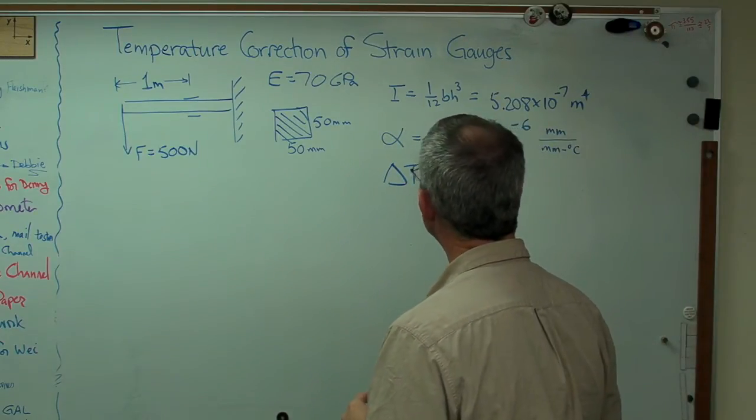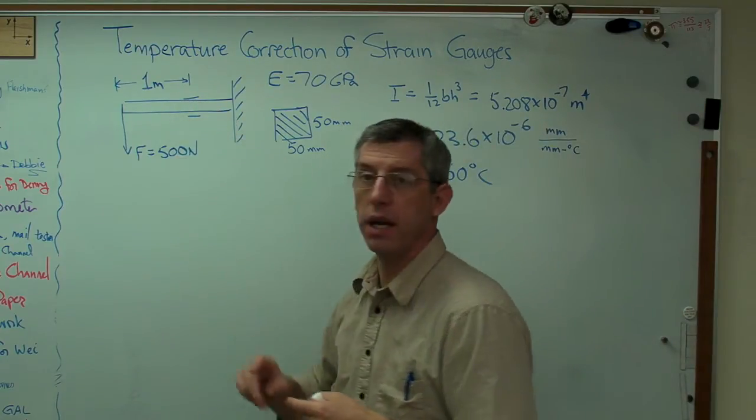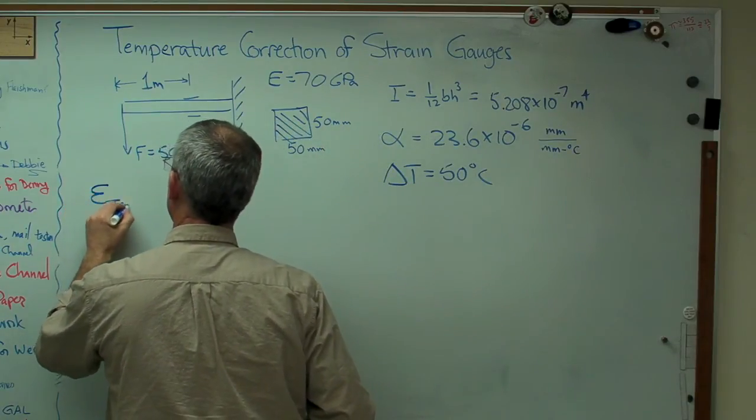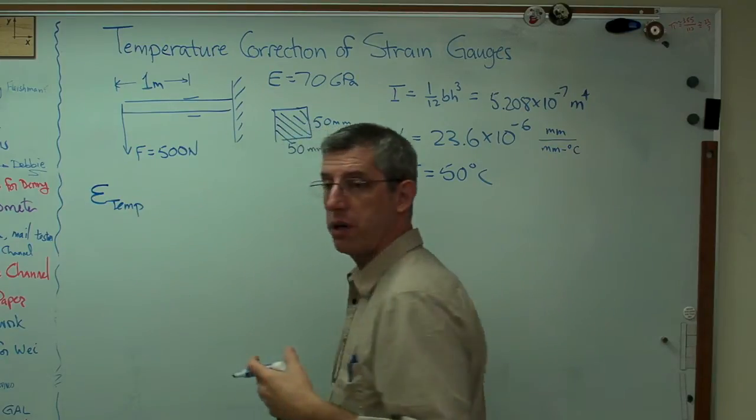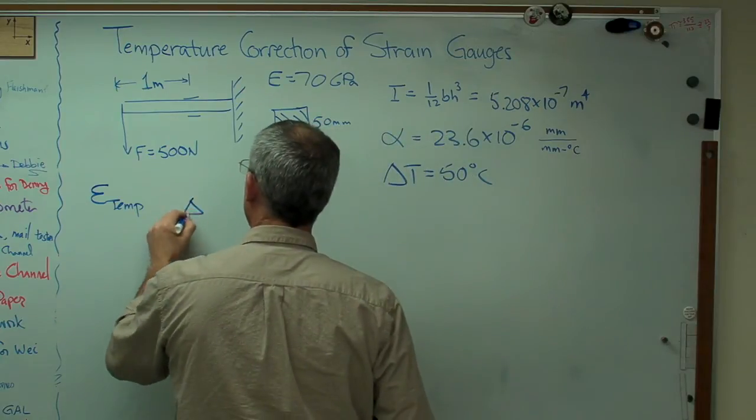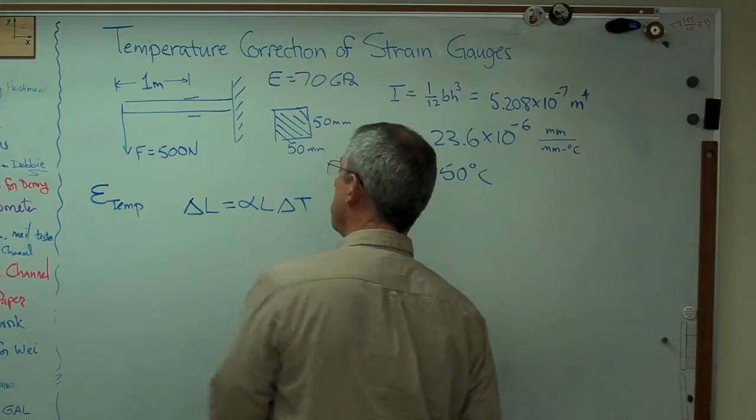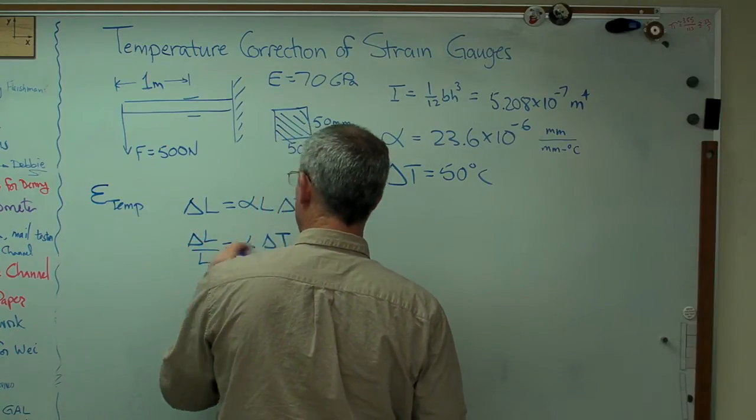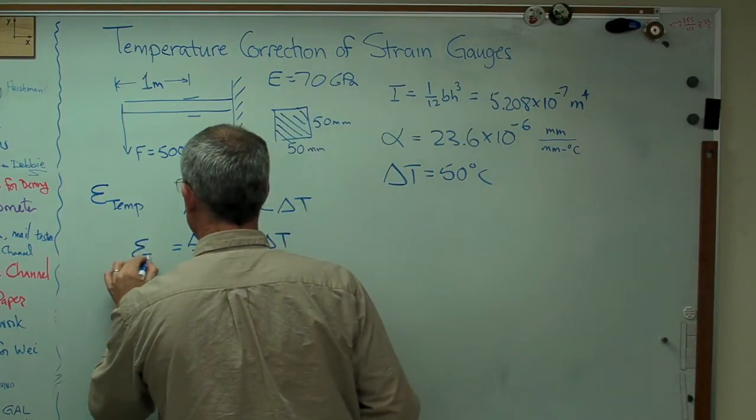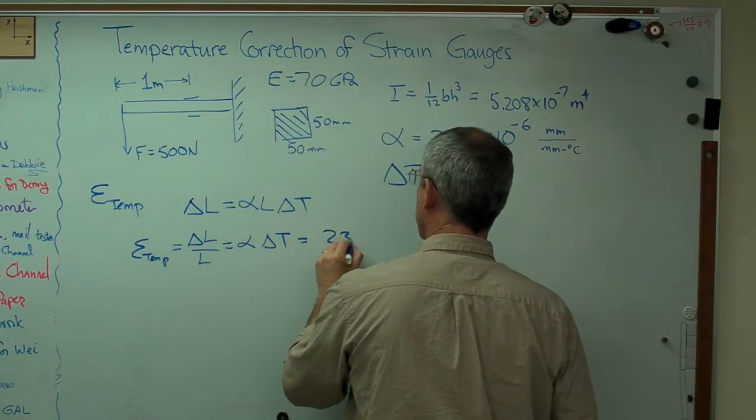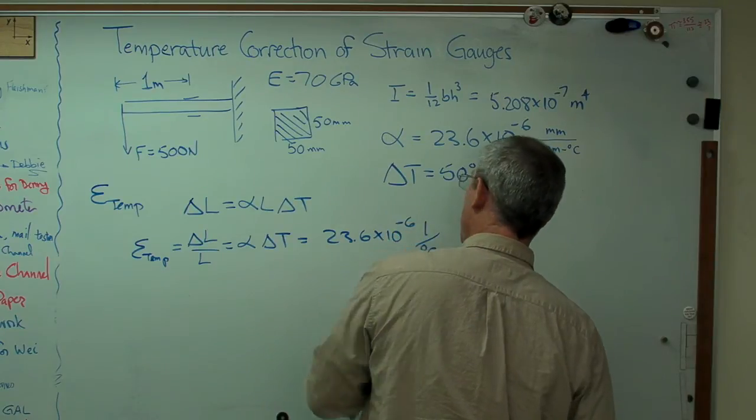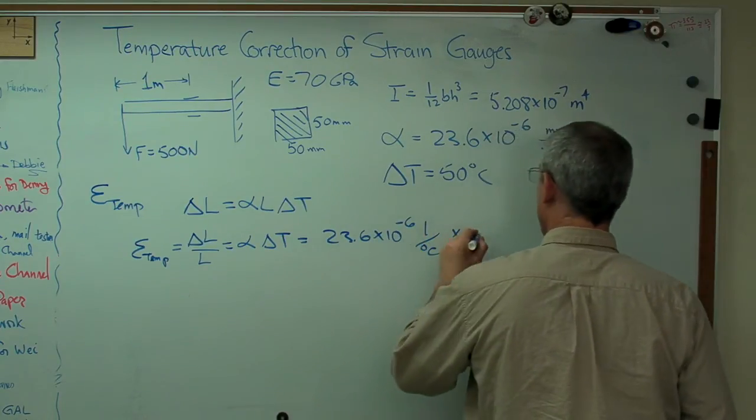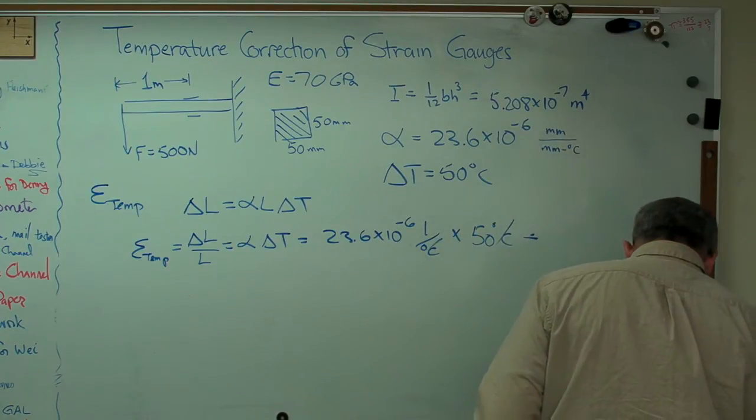What we're interested in now is figuring out the strains at this gauge and that gauge due to the temperature change, and then due to the load. We know that the expression for change in length for a beam equals alpha L delta T. That's probably in your book somewhere. If I divide through by L, I get this. Change in length over length, that's strain. The way I learned it, that's what it was. So if I put 23.6 times 10 to the minus 6, 1 over degree C, and multiply that by 50 degrees C, the units cancel out.